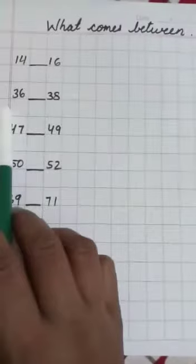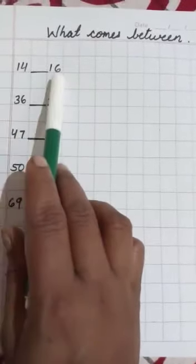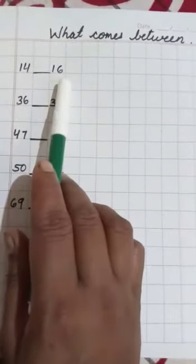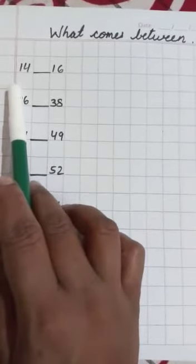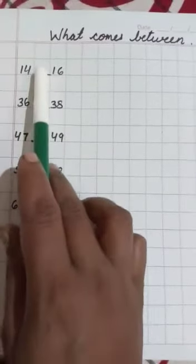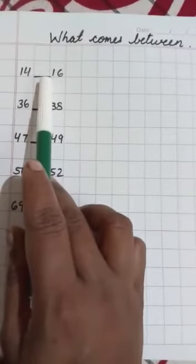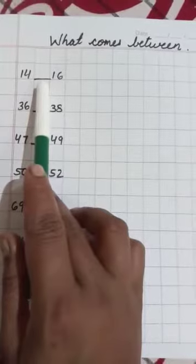That means we have to find out the number between this two number, between the two number. You can see in between the two number, one number is missing. There is a blank. We have to find out this number. Okay, let's go.